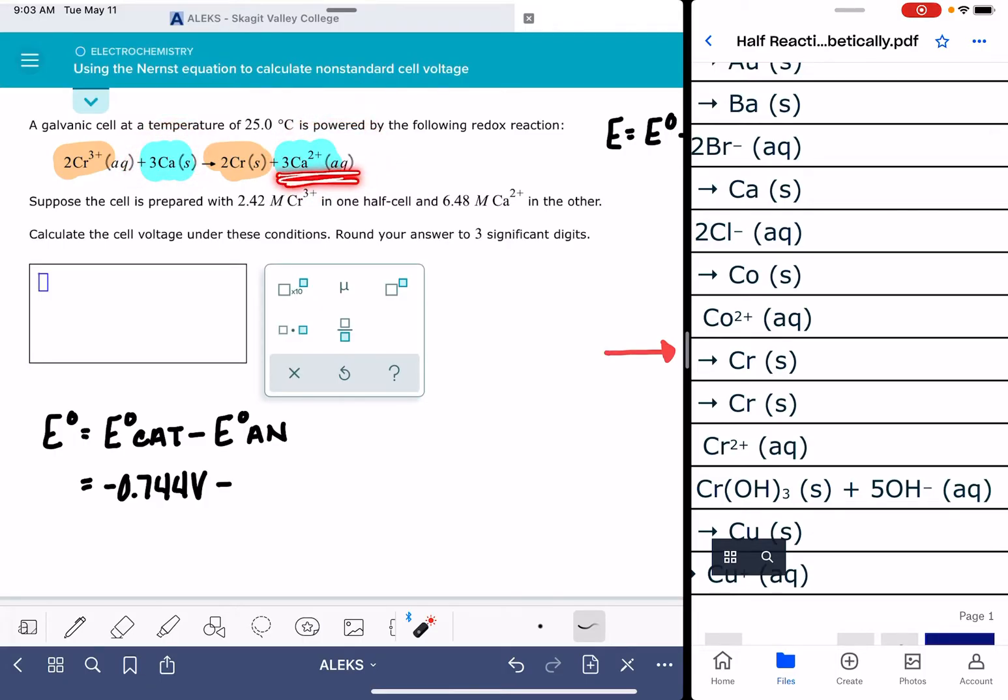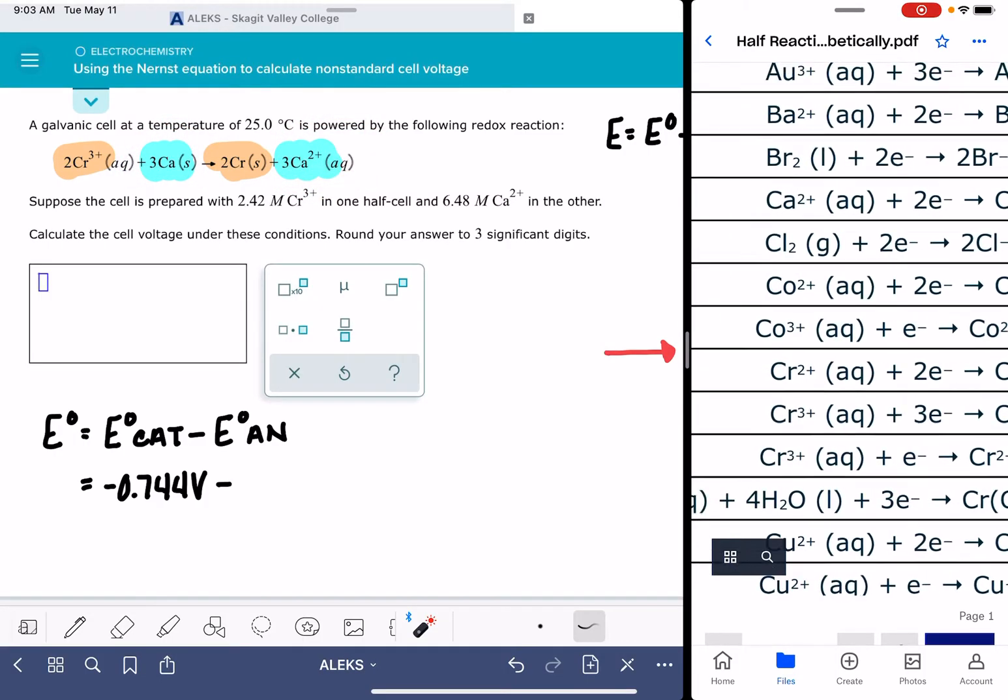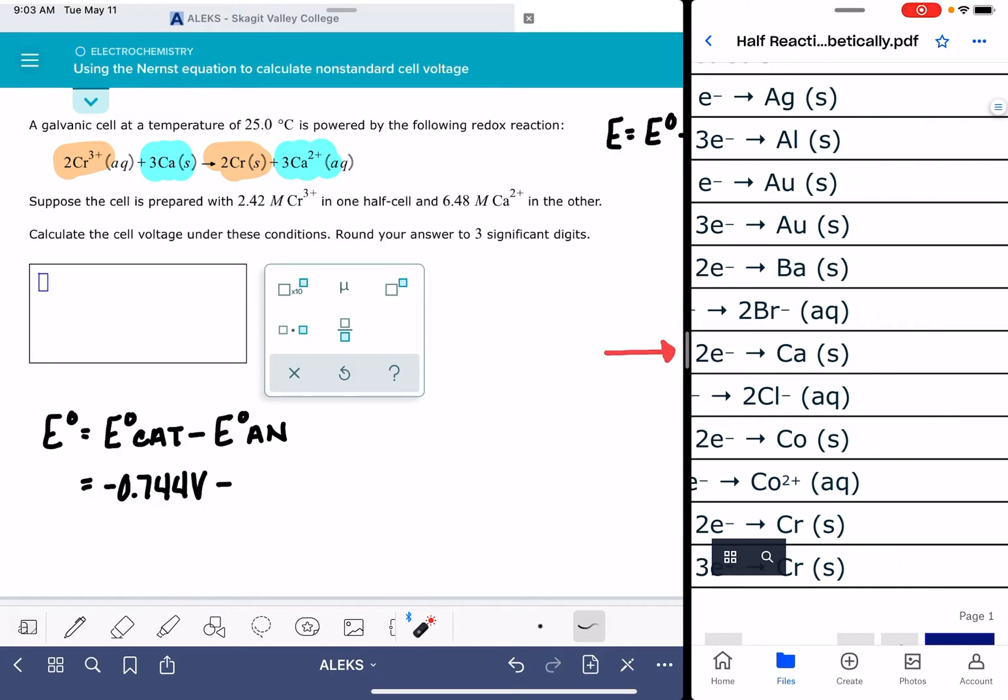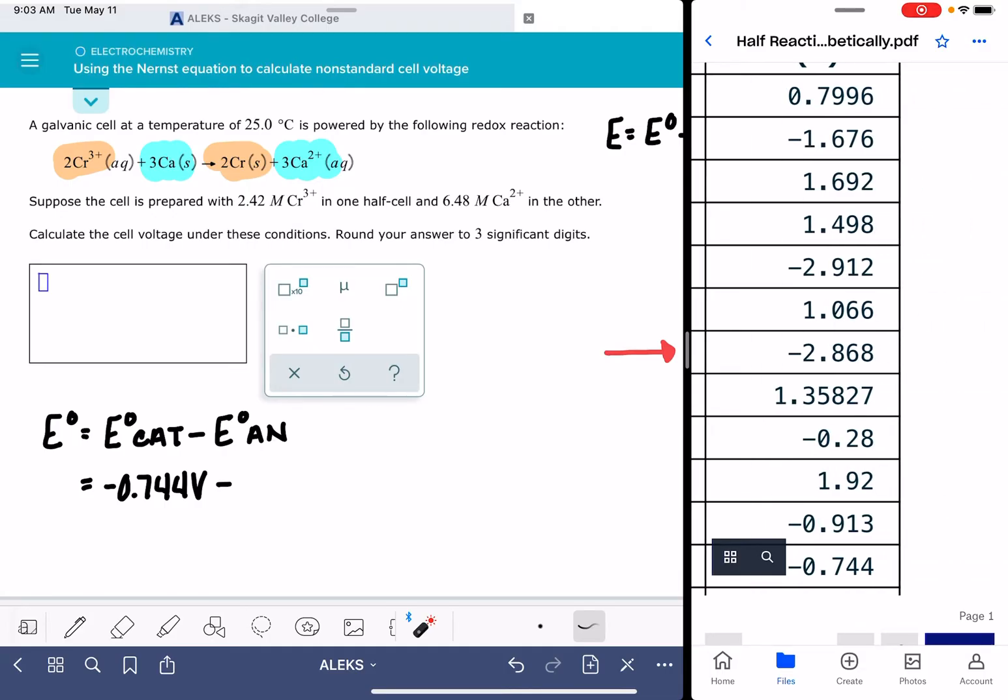And it is right here, calcium 2 plus plus 2 electrons makes calcium solid. This is our anode voltage, negative 2.868. So let's calculate our overall E cell standard. Negative 0.744 minus a negative 2.868 is 2.124 volts.